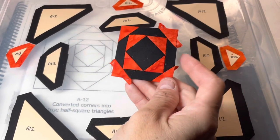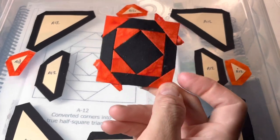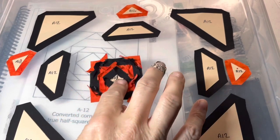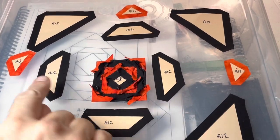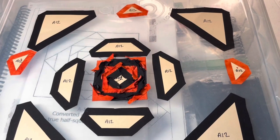So I've got the next round of triangles attached, so now I've got a square again. Next is to attach these around that square.